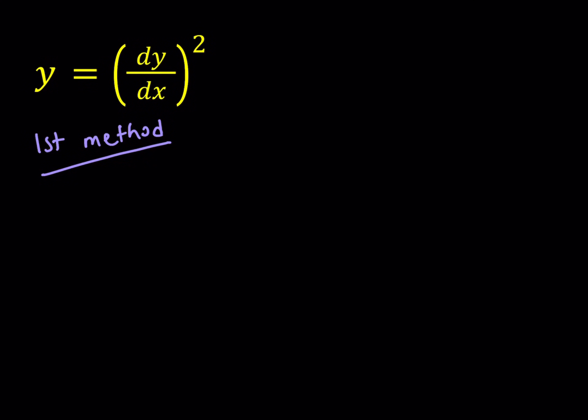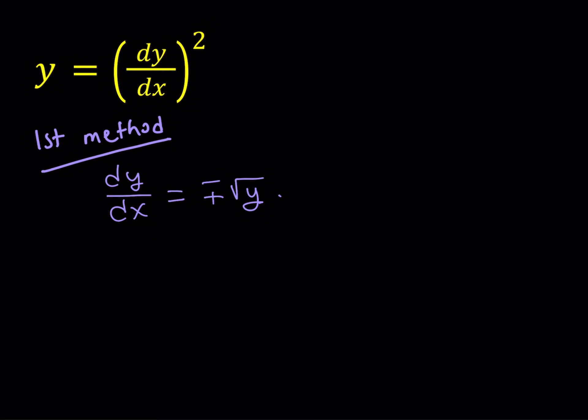The first method involves square rooting both sides. When we square root both sides, we're going to get a plus-minus sign, so dy over dx equals plus or minus the square root of y — because when you square either sign, you're going to get y. From here we can separate the variables, since this is a separable differential equation. We can write this as dy over square root of y equals plus or minus dx.